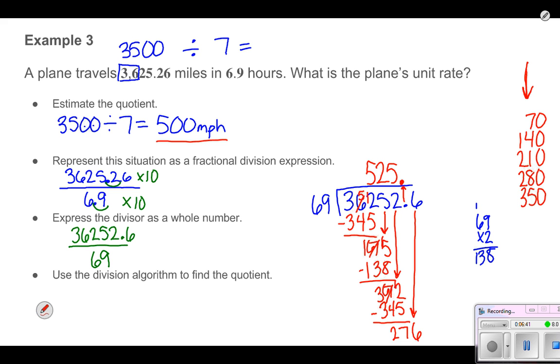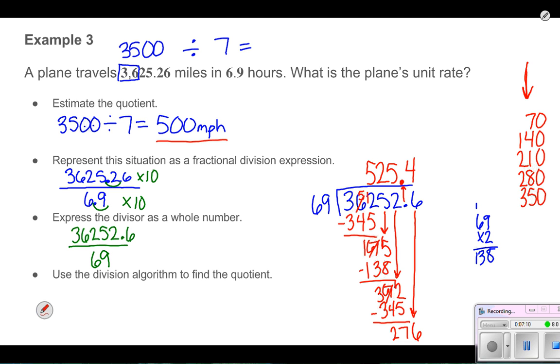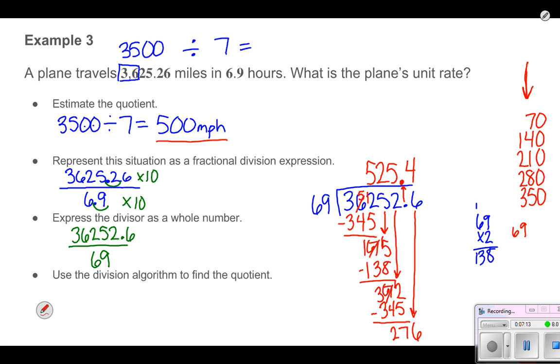Bringing down that 6, I now have to try to figure out how many sets of 69 I can get out of 276. When I look here, I have 4 sets of 70 was 280. 276 is just 4 less than that. 69 is 1 less than 70, so it looks like I should be all set with 4. When I do 69 times 4, 9 times 4 is 36, carry the 3. 6 times 4 is 24, plus the 3 is 276. So I have nothing left over.